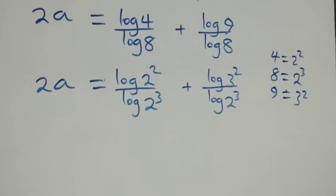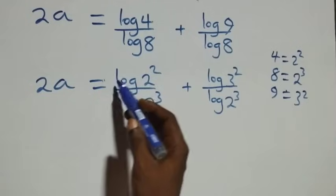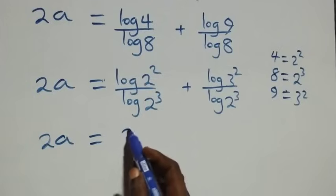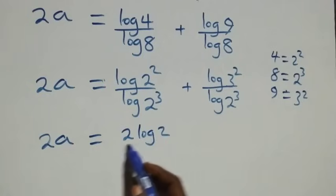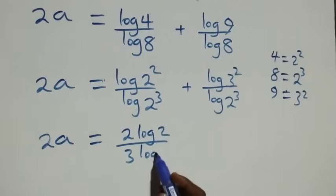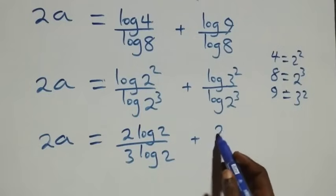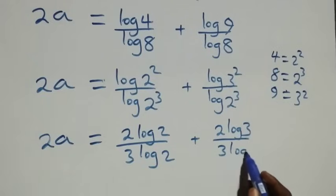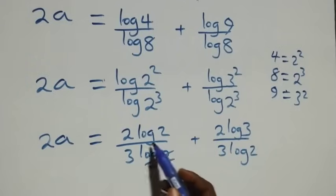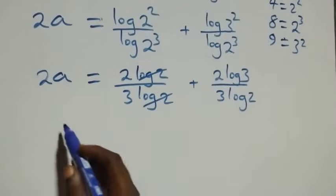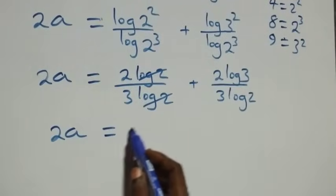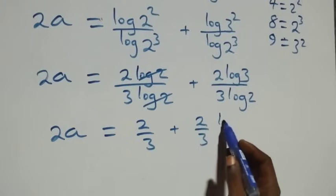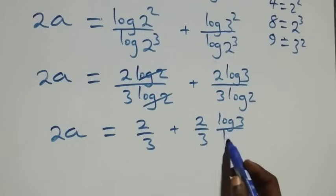Applying the log power rule to bring down the exponents, we have 2a equals 2 log 2 over 3 log 2, plus 2 log 3 over 3 log 2. Simplifying, this becomes 2a equals 2 over 3 plus 2 over 3 times log 3 over log 2.